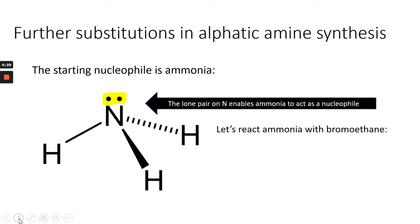Let's react some ammonia with bromoethane to start the reaction off. You can clearly see ammonia behaving as a nucleophile, as the lone pair is attracted to the delta-positive carbon on the C-Br bond in bromoethane.